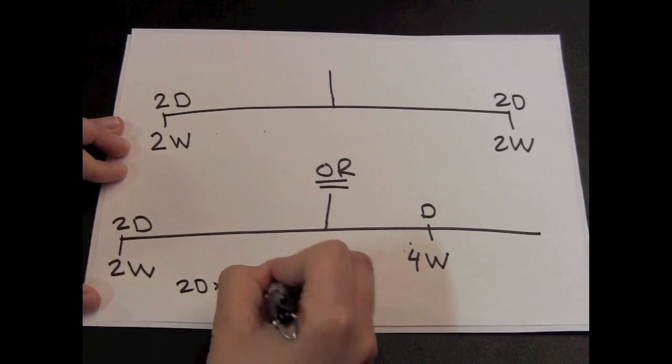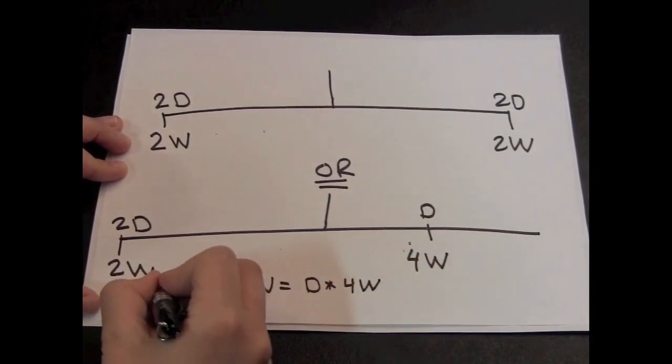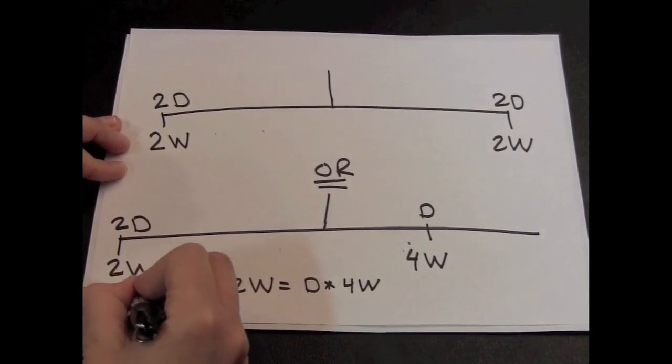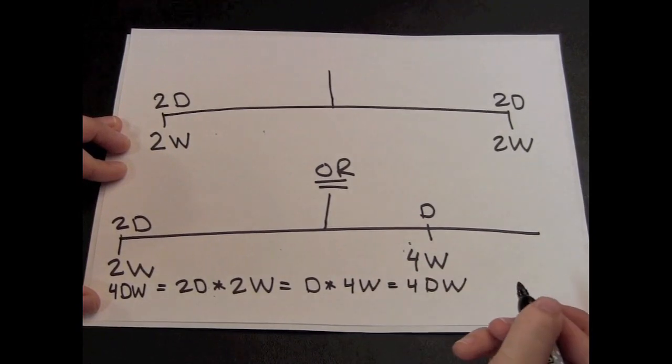Let's check that this would make the torques work out. On the left-hand side, we have 2D times 2W, which is 4DW. And on the right-hand side, we have D times 4W, which is also 4DW.